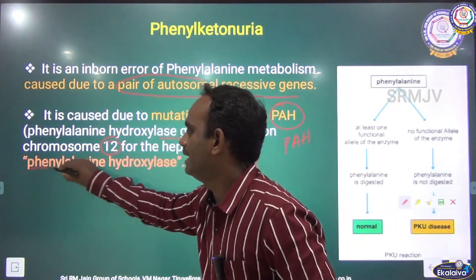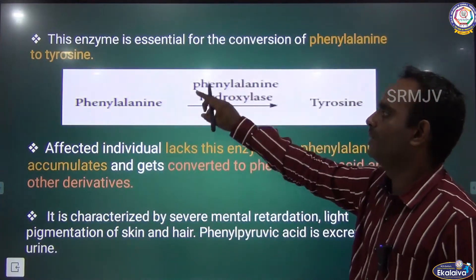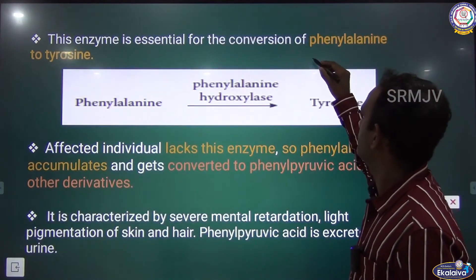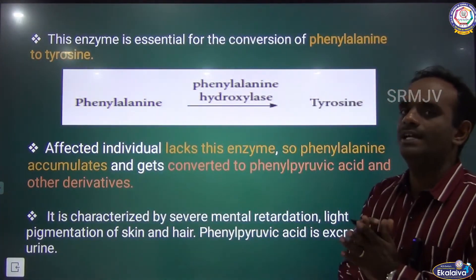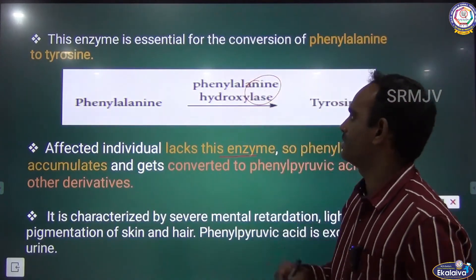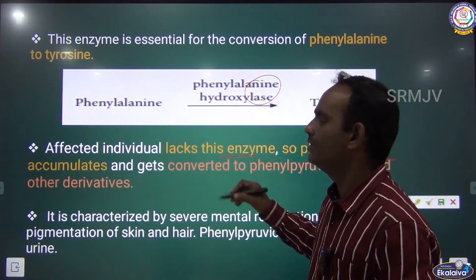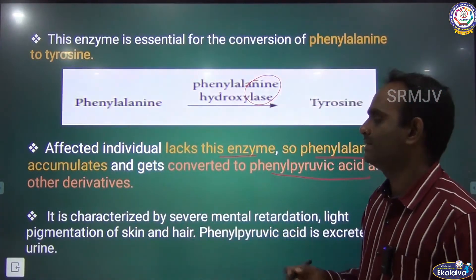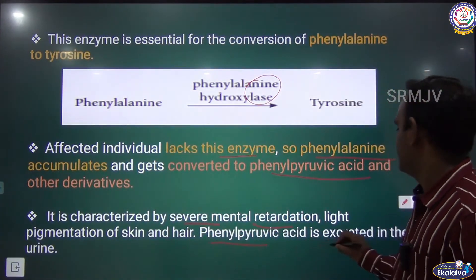The PAH gene is necessary for the formation of the enzyme phenylalanine hydroxylase. This enzyme is essential for the conversion of phenylalanine into tyrosine. Affected individuals lack this enzyme. If a person has phenylketonuria, there is no enzyme production, so phenylalanine accumulates and gets converted to phenylpyruvic acid, phenyl lactic acid, and other derivatives. It is characterized by severe mental retardation, light pigmentation of skin and hair, and phenylpyruvic acid is excreted in the urine.